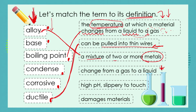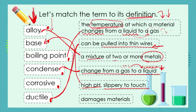What do we call the process where we can change a material from a gas state back into a liquid state? Have a look at our terms — you see the term condense. We're nearly there: high pH, slippery to touch — what are we looking at with that definition? We're looking at bases.